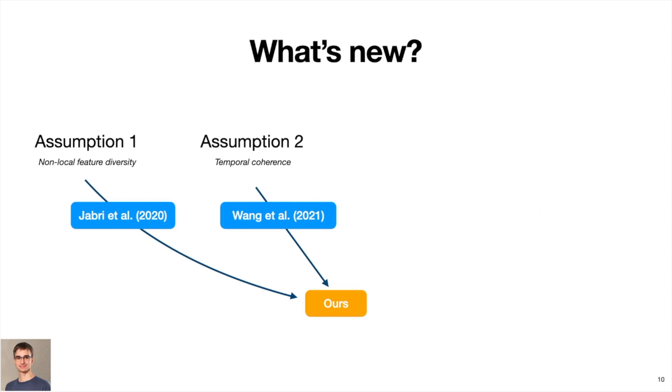Let us summarize the novelty of our approach in the context of these assumptions. While assumptions 1 and 2 on non-local feature diversity and temporal coherence were studied independently in previous works, we investigate their combination in our work.